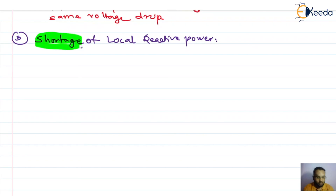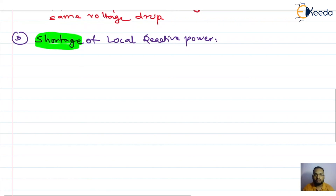So these are the three situations where we can have the problem with reactive power flow, and that problem can lead to voltage collapse. Thank you very much.